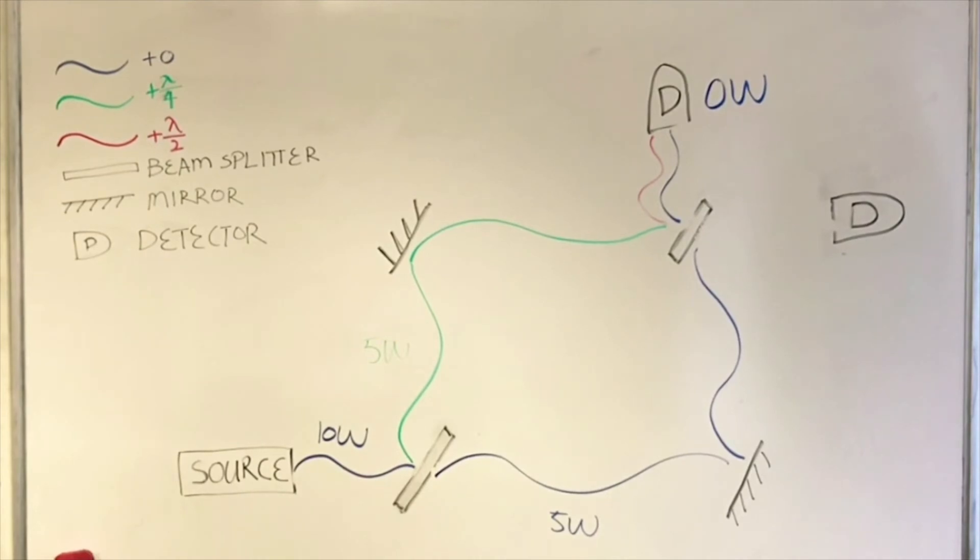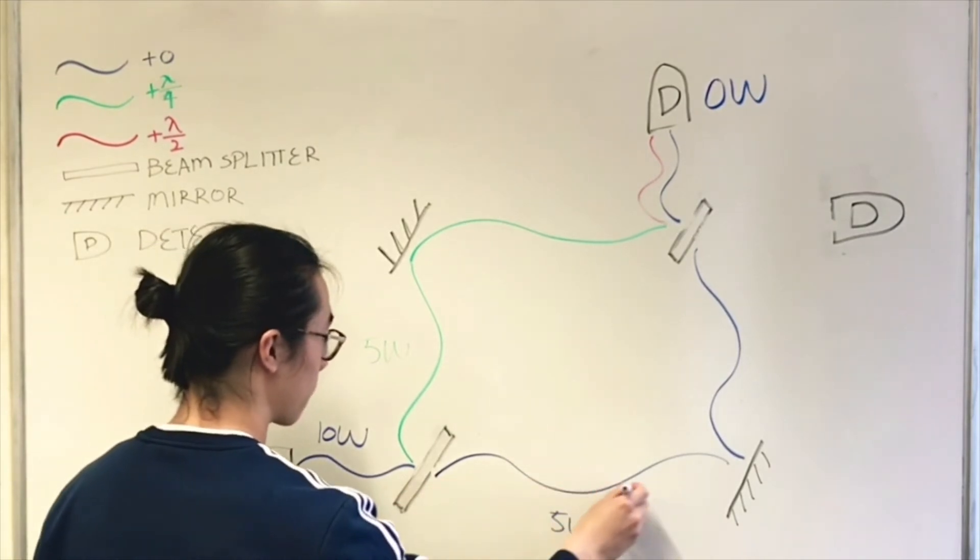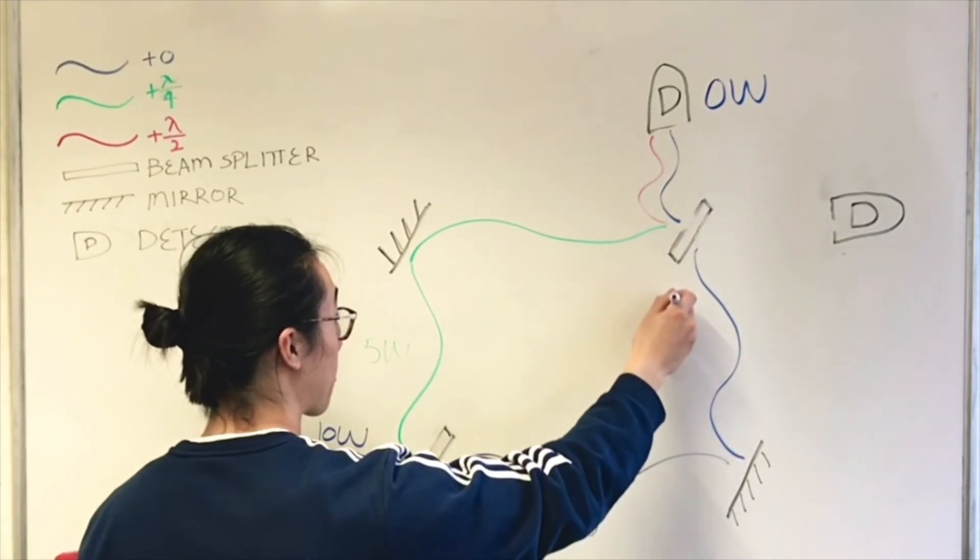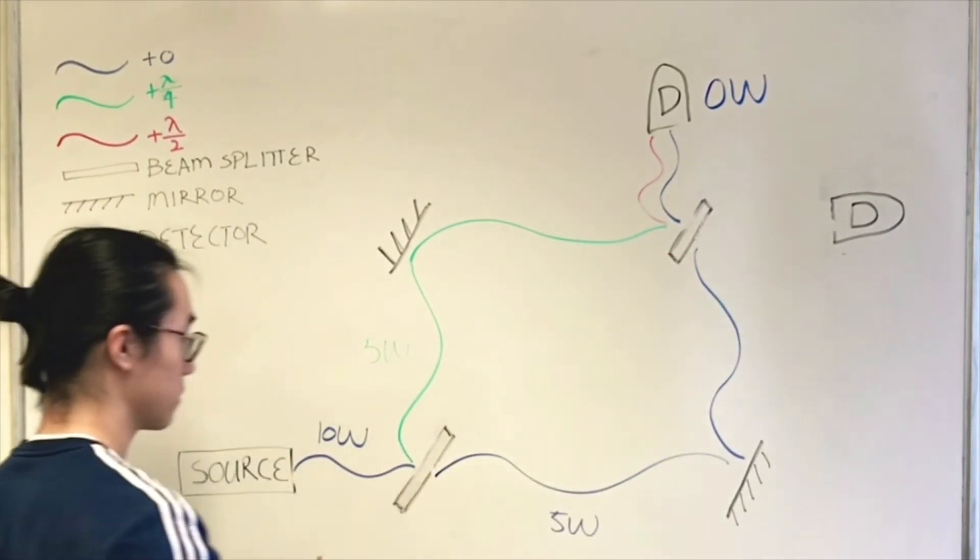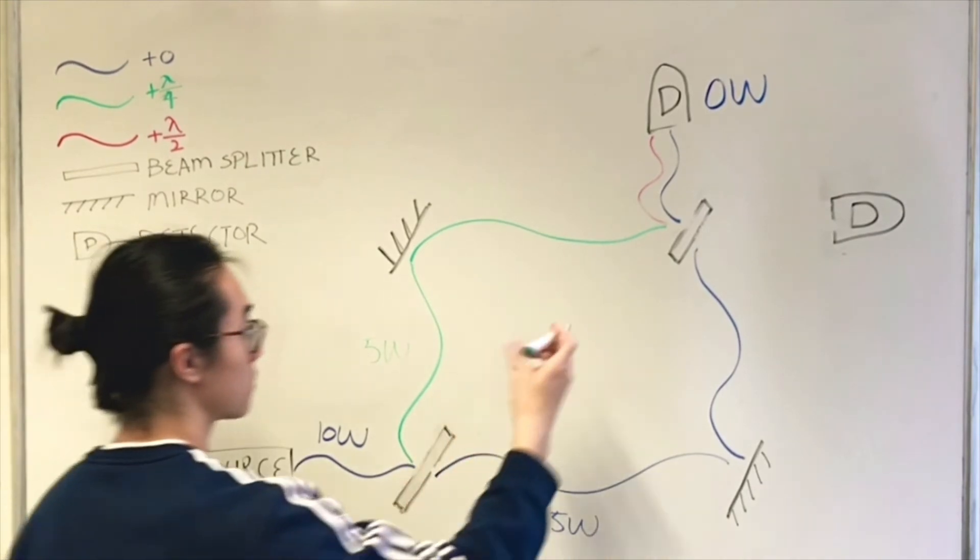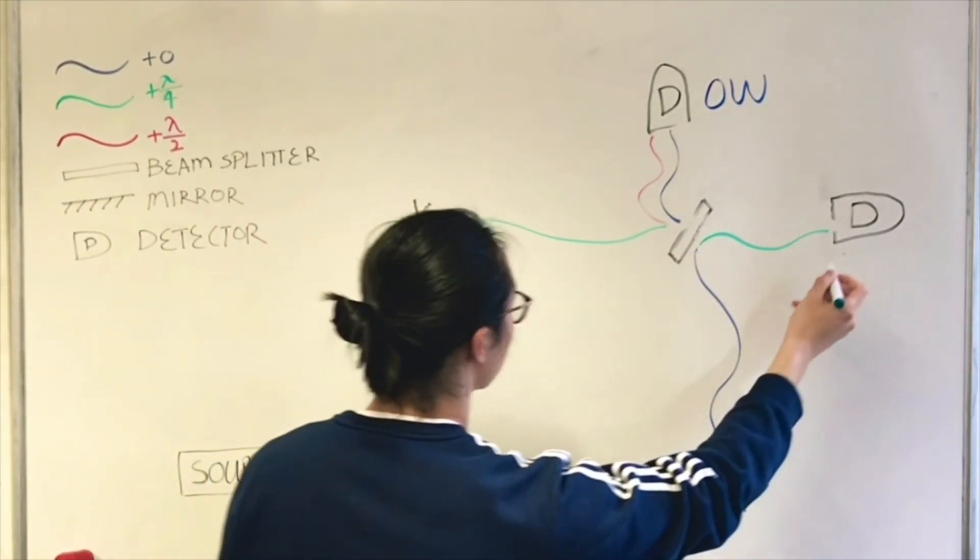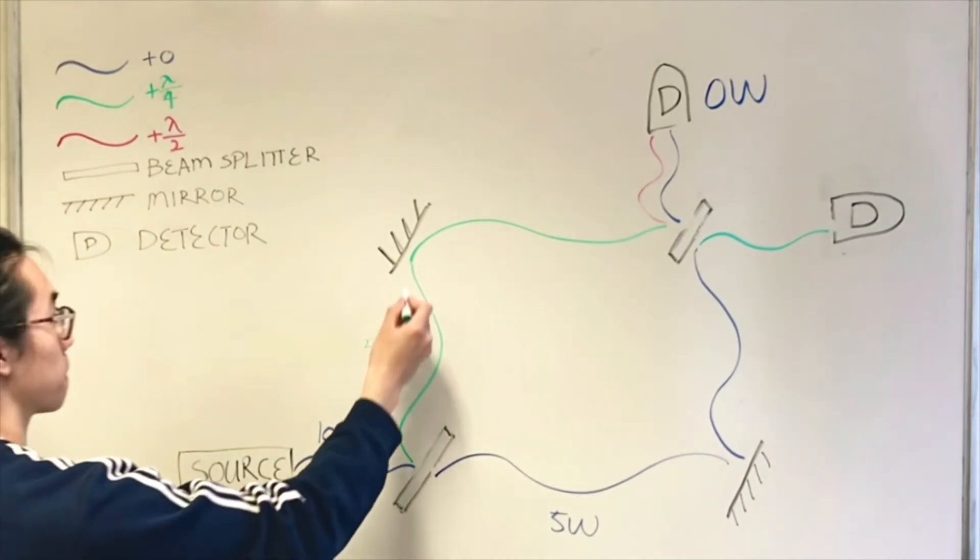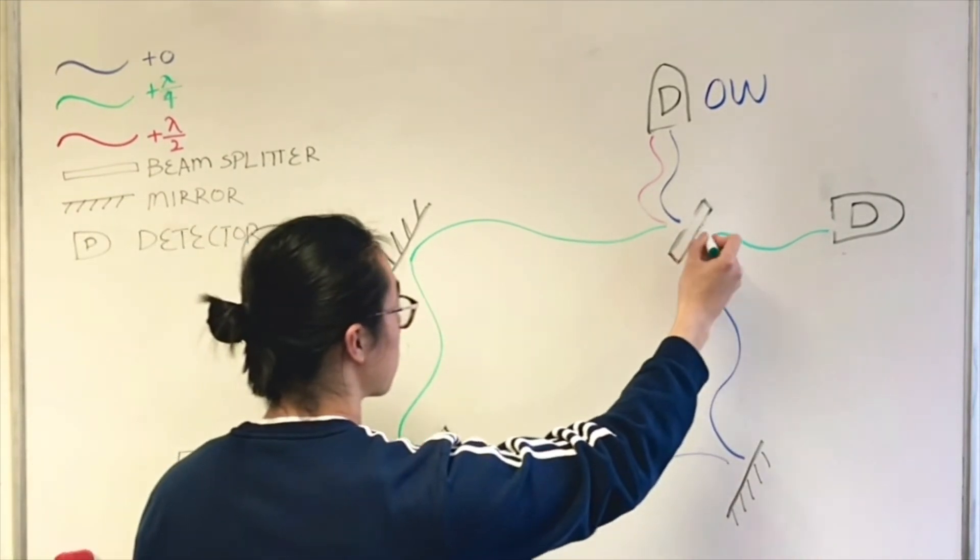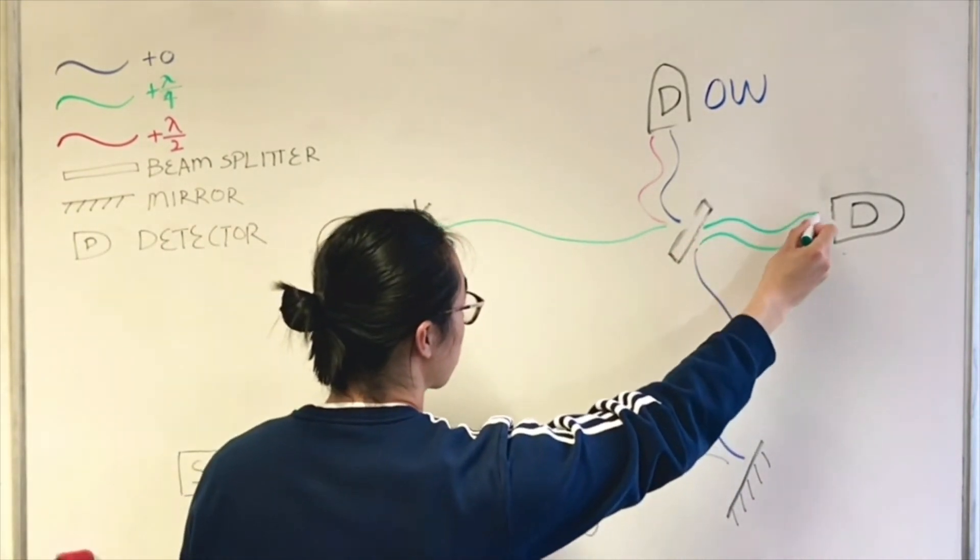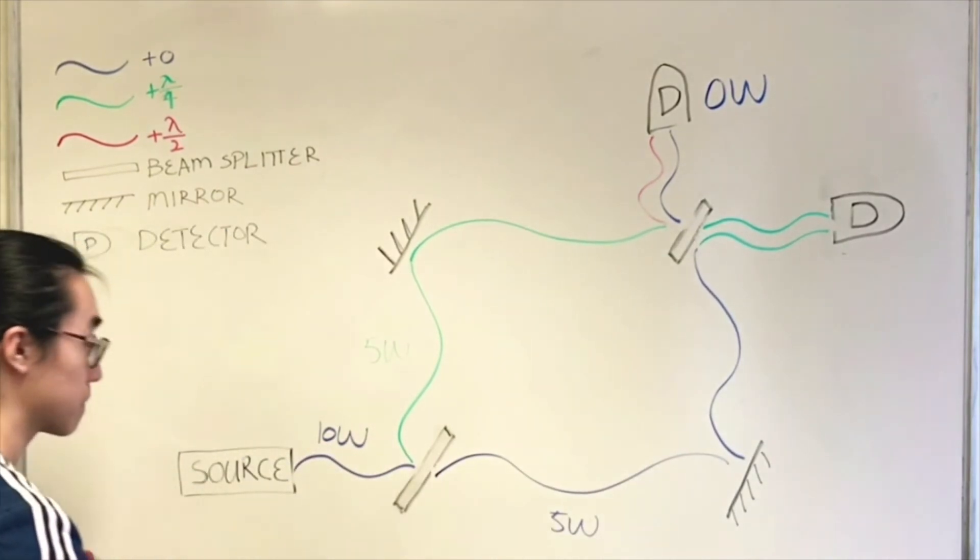Now we can look at the bottom detector. Everything is the same before waves reach the last beam splitter. The wave that went through the first beam splitter undergoes reflection caused by the beam splitter, experiencing a phase shift of a quarter wavelength. The wave that was reflected by the first beam splitter will go through the last beam splitter causing no phase shift. Therefore, it will stay green.